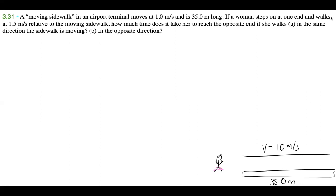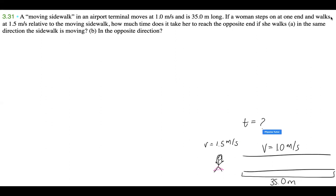She is going to be walking at 1.5 meters per second relative to the sidewalk. We want to know how long does it take for her to get from point A, which is the beginning of the sidewalk, to point B, which is the end of the sidewalk. So A and B, start to finish — how long does it take her? So let's go ahead and write down all of our notes now that we've understood this problem and drew out a diagram for ourselves.